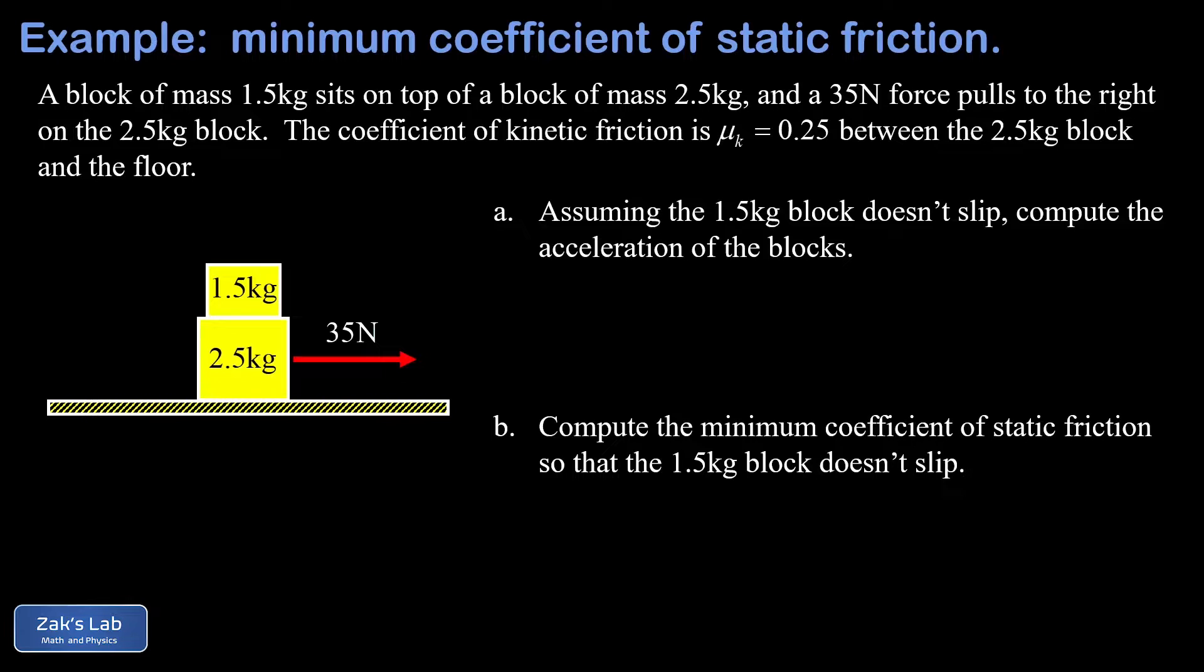In the first part of the question we're told to assume the top block doesn't slip as we accelerate the combination and we want to find the acceleration of the blocks. If the top block isn't slipping there's no problem with thinking about the block combination as a single four kilogram mass.